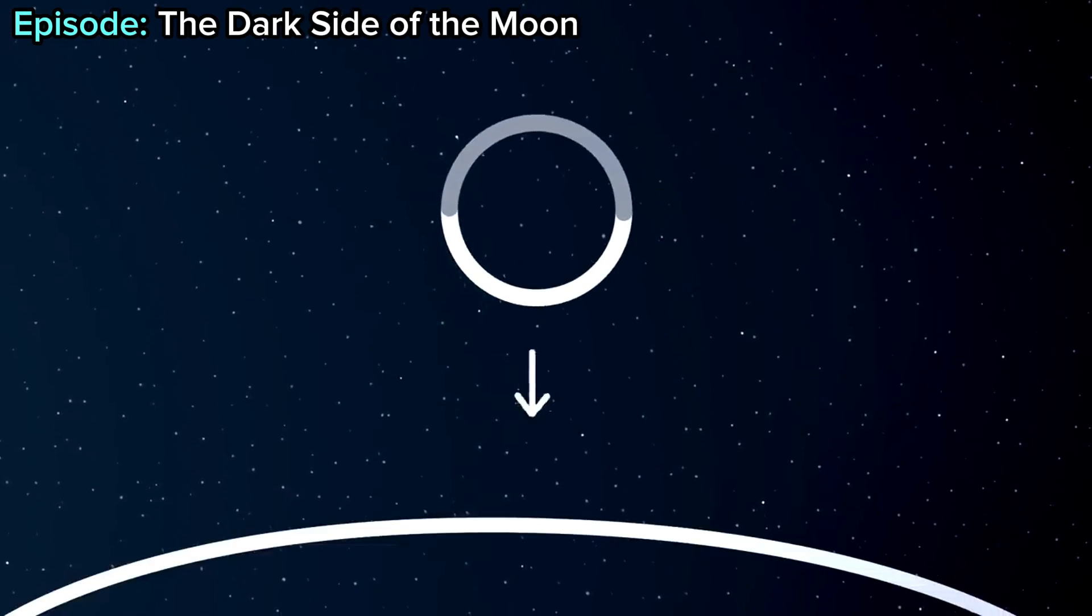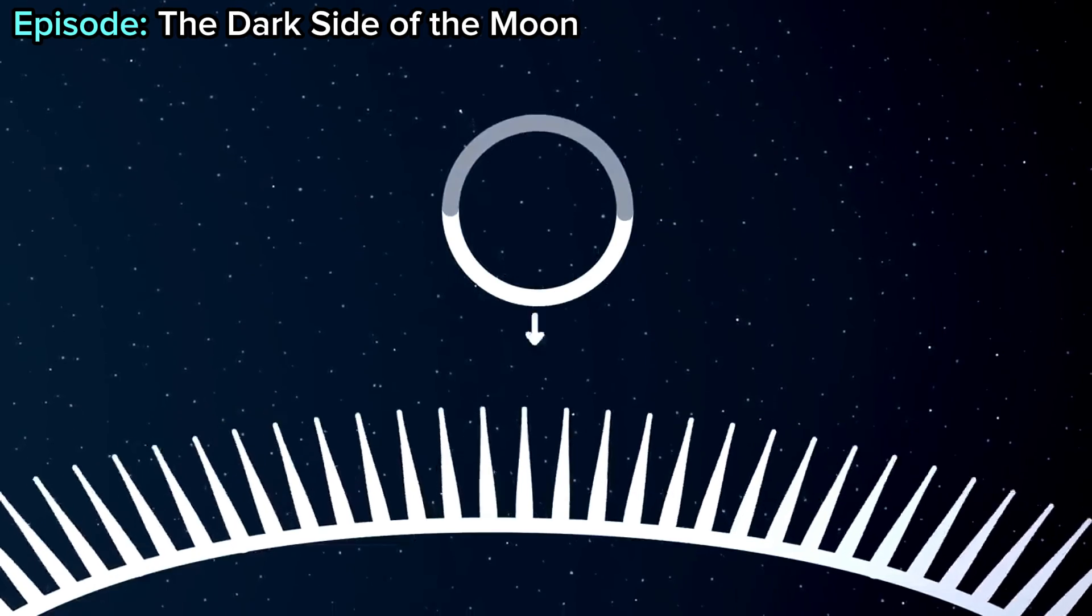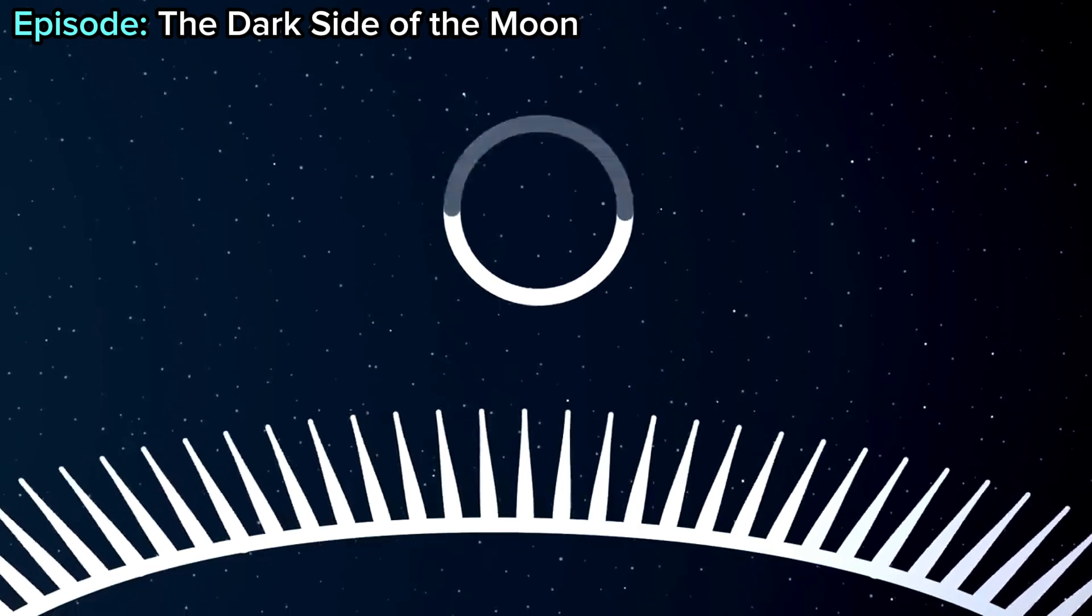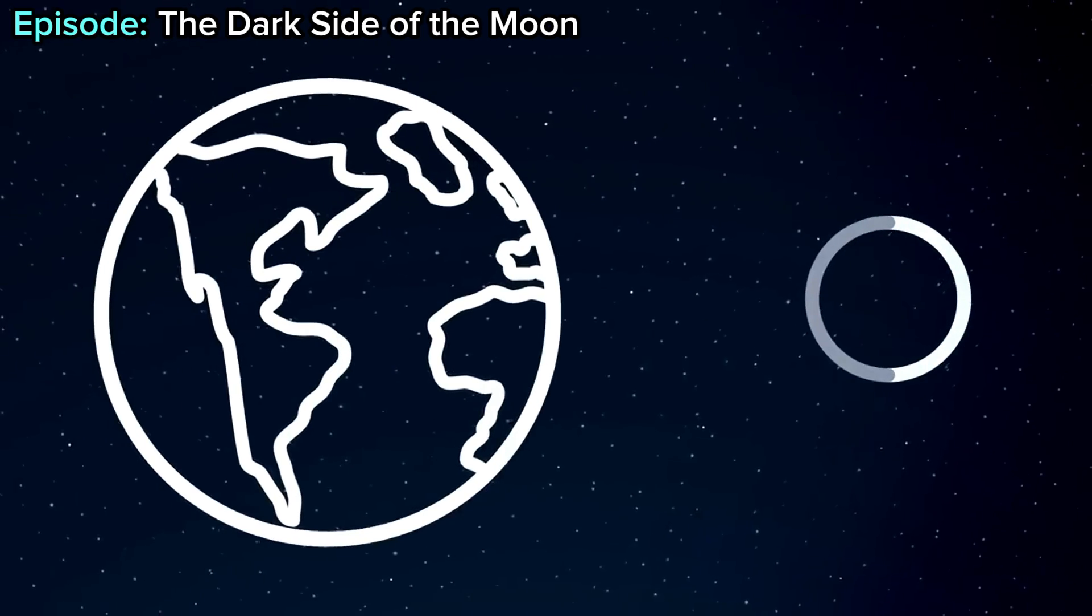If we were tidally locked with the sun, who is the source of light in the solar system, then sure, we'd have a dark side, but we're tidally locked with the earth, which orbits the sun and we spin around it.